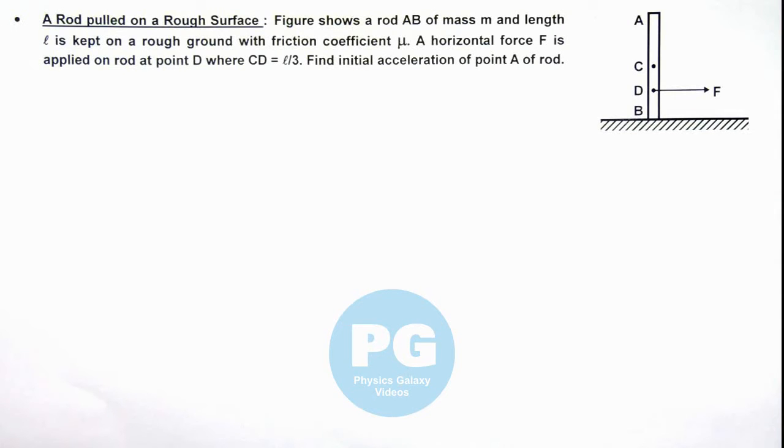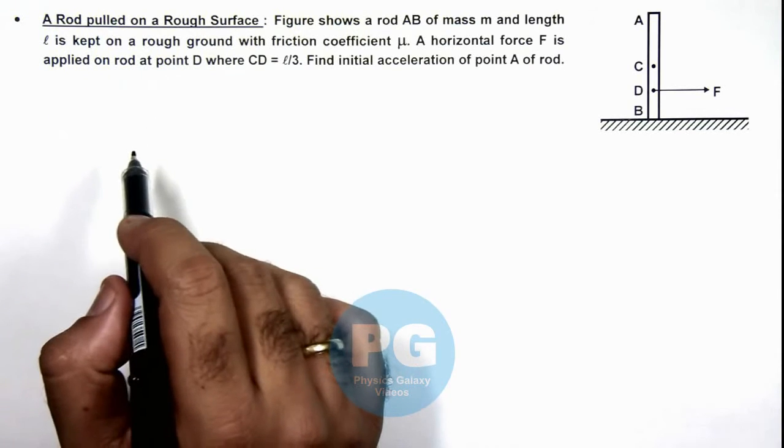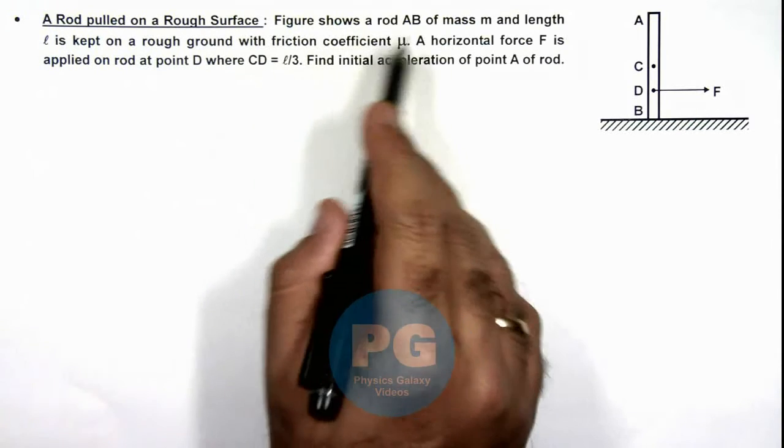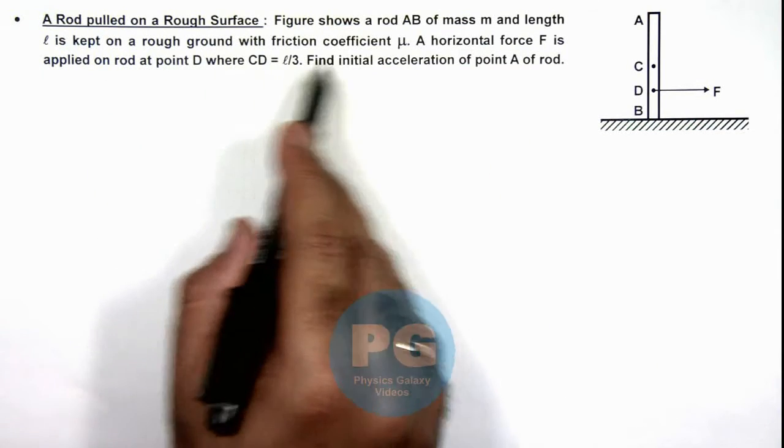In this illustration we'll analyze a case when a rod is pulled on a rough surface. Here the figure shows a rod AB of mass m and length l is kept on a rough ground with friction coefficient μ.